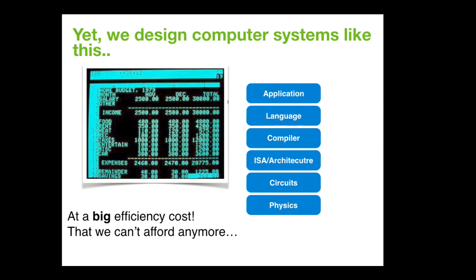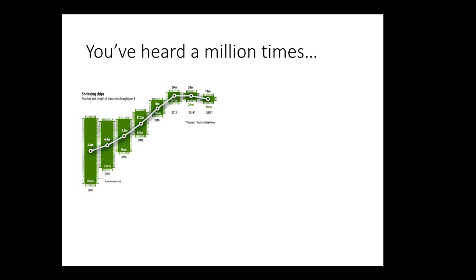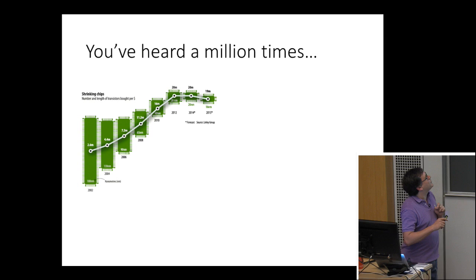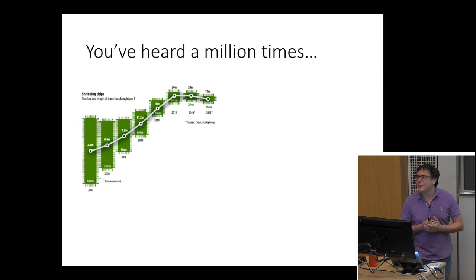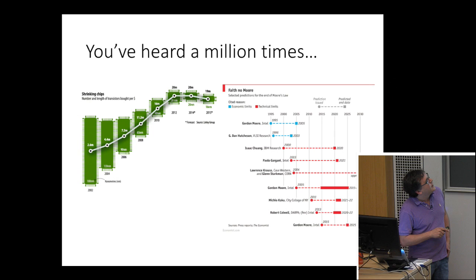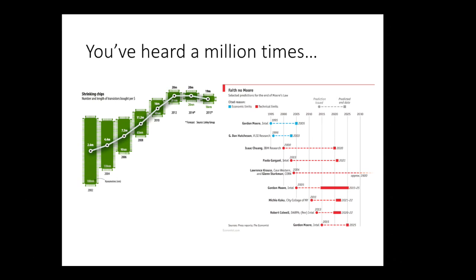You know this much better than I do — Moore's Law is ending. The Economist had a fantastic piece on the end of Moore's Law. One plot shows how many transistors you get per dollar, and just in 2015 it actually decreased — we get fewer transistors per dollar than before. Gordon Moore himself said it would end in 2005 for economic reasons, and later revised that to 2025 for physics reasons. My favorite quote: the number of people predicting the end of Moore's Law doubles every year.